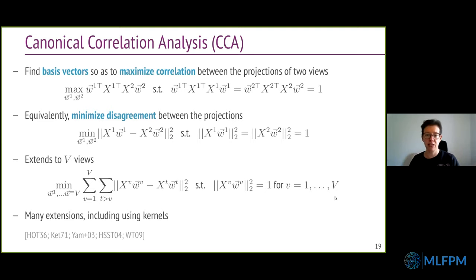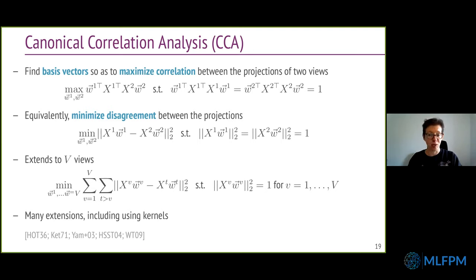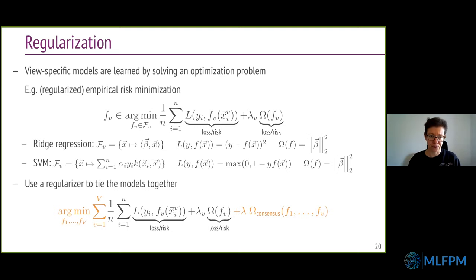With CCA, we're talking about dimensionality reduction where each view gets sent to a different representation, but those different representations will agree among themselves. In a supervised setup, you still need one more step: how do you go from having those different representations — still one representation per view — to a single unified model? The answer is typically through regularization.